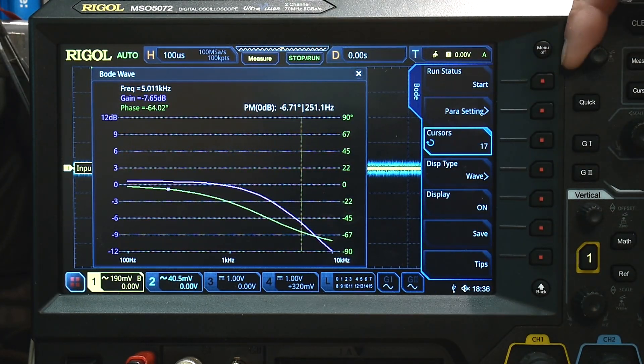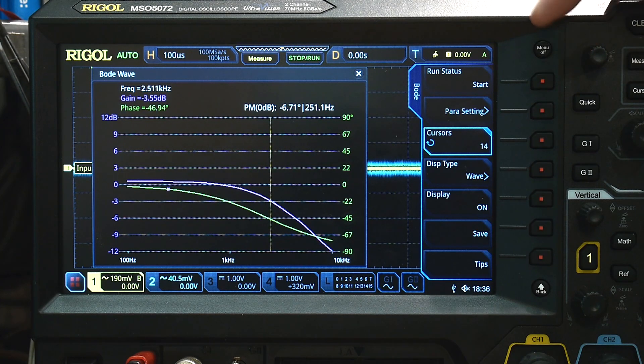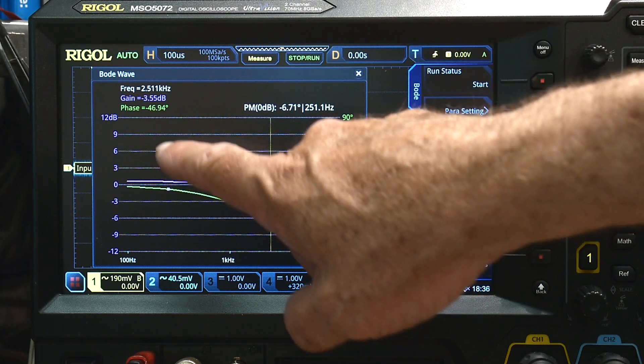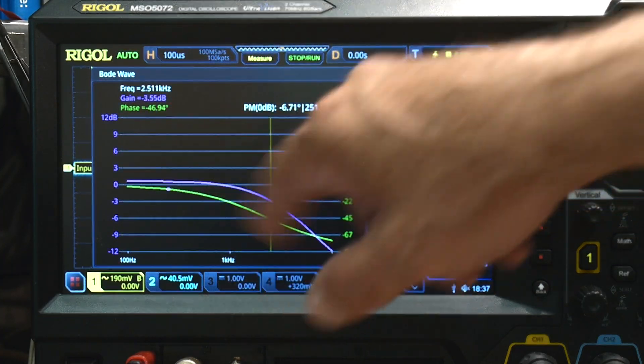We could turn on a cursor, and we could go look for it. Like I say, let's see, yep. The 3 dB point is right there, and that happens at 2.5 kilohertz.